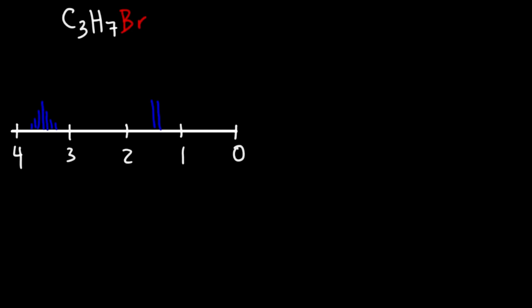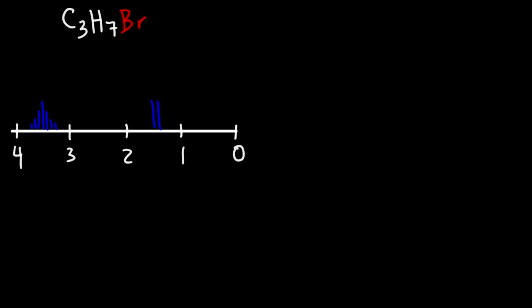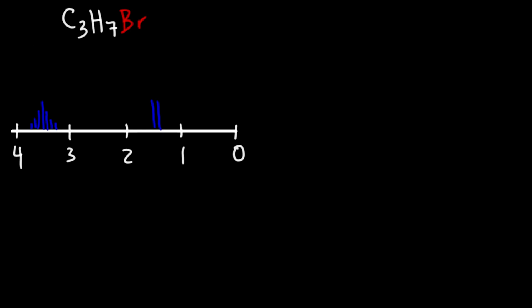In this example we're given the molecular formula of a compound and our goal is to use this NMR spectrum to determine the exact chemical structure. Because we have only three carbon atoms, it might be wise to draw the different ways in which we can represent this molecule.